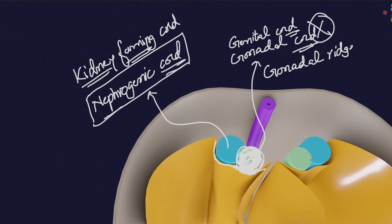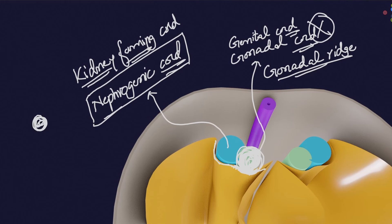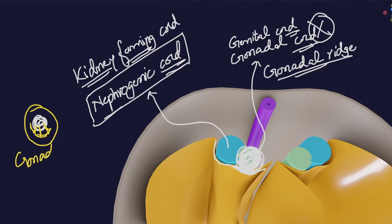The gonadal ridge is nothing but the genital chord plus the celomic epithelium covering it — considered as a whole. If we talk about the genital chord only, that is the gonadal chord. But when we include the celomic epithelium in front of it — which will actively send processes into it — this whole structure is called the gonadal ridge.